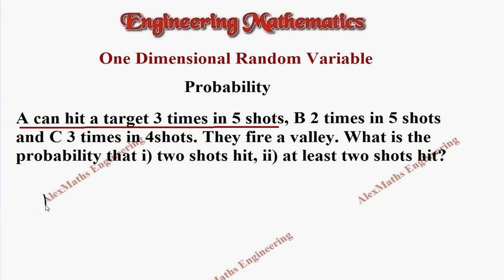It means the probability of A is 3 by 5. In the same way, probability of B is given as 2 times in 5 shots. So 2 by 5. And probability of C is 3 times in 4 shots. So 3 by 4.